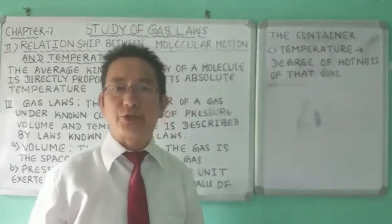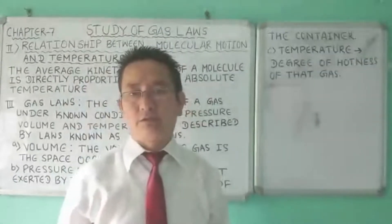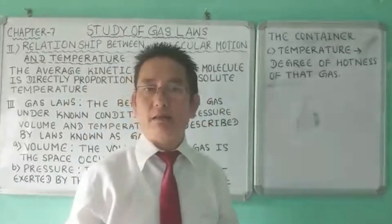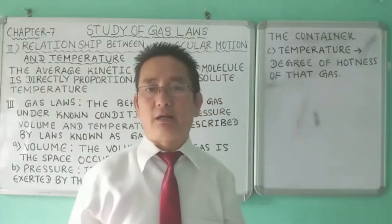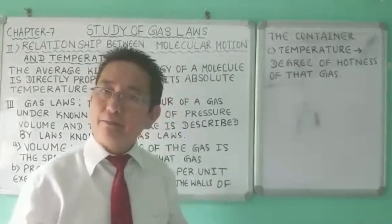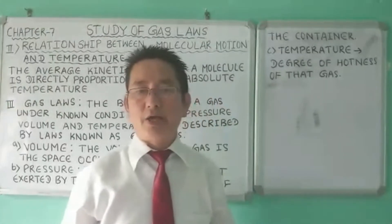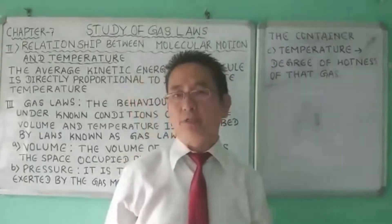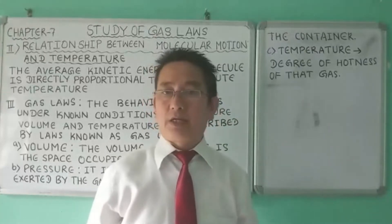When the temperature is zero, molecular motion ceases. This fact is applied in defining a scale of temperature known as the Kelvin scale, or absolute scale of temperature. The temperature at which molecular motion ceases completely is known as absolute zero.